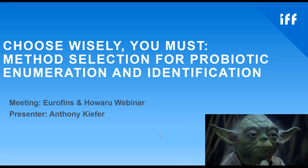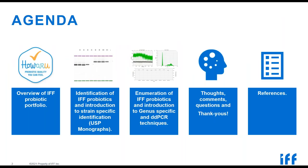I'm going to give a broad overview to start of the IFF probiotic portfolio, then move on to talk about identification of our probiotics, focusing specifically on our strain-specific identification methods captured in USP monographs. After that, I'll talk about how to enumerate our probiotics and introduce a couple of new techniques, including a genus-specific method and droplet digital PCR techniques. I'll save time for thank yous and references for further reading.